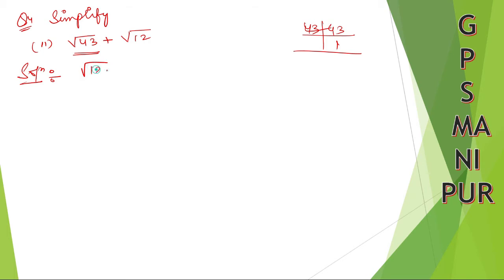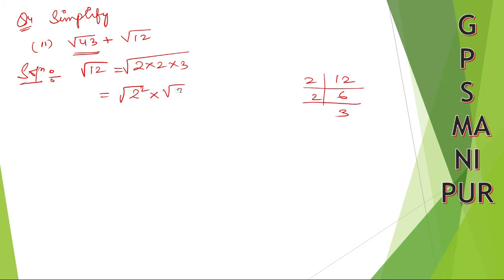Let me take √12. If you take the factorization of 12: 2 times 6 is 12, and 2 times 3 is 6. So it will be 2 × 2 × 3 under the root. We can write this as √(2² × 3), which is √2² × √3.